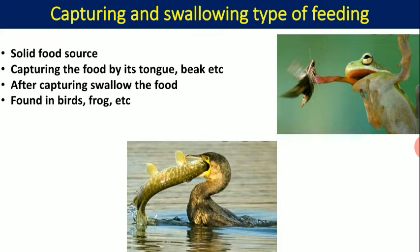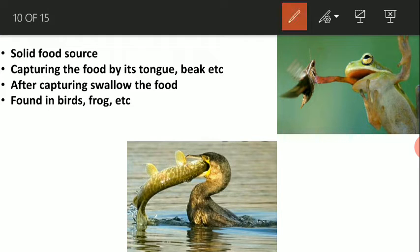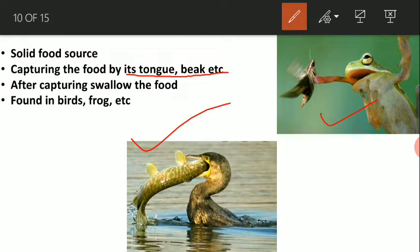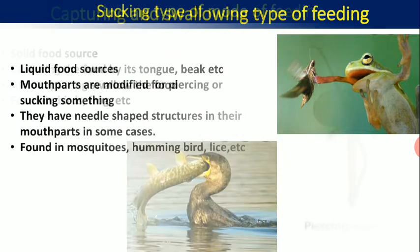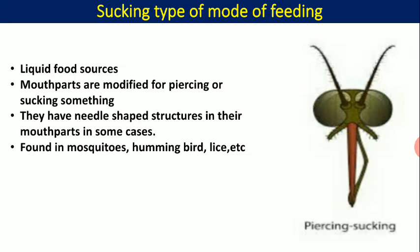The next type is capturing and swallowing. The food source is solid, but special structures like the tongue or beak are involved. For example, a frog throws its tongue onto insects to capture them, and birds capture food material with their beak. This type of feeding mechanism is known as capturing and swallowing.